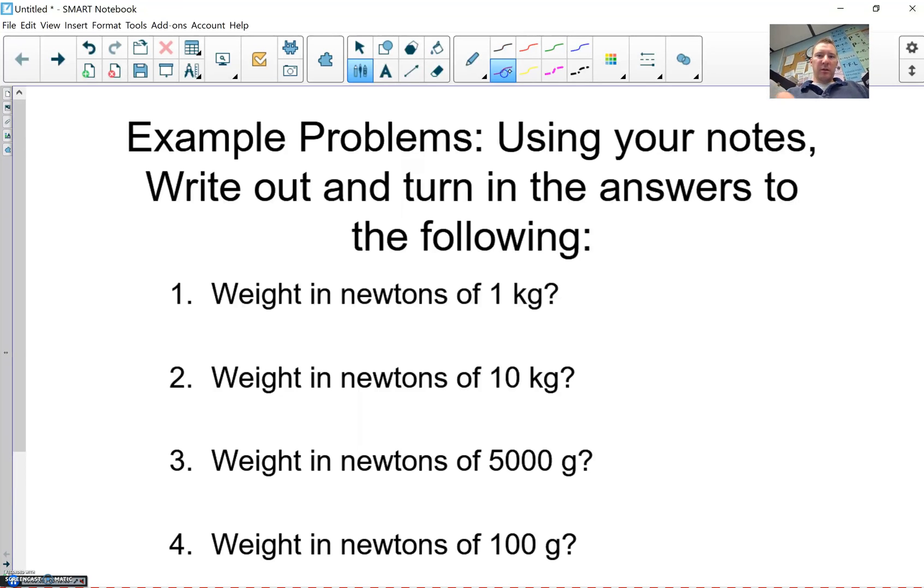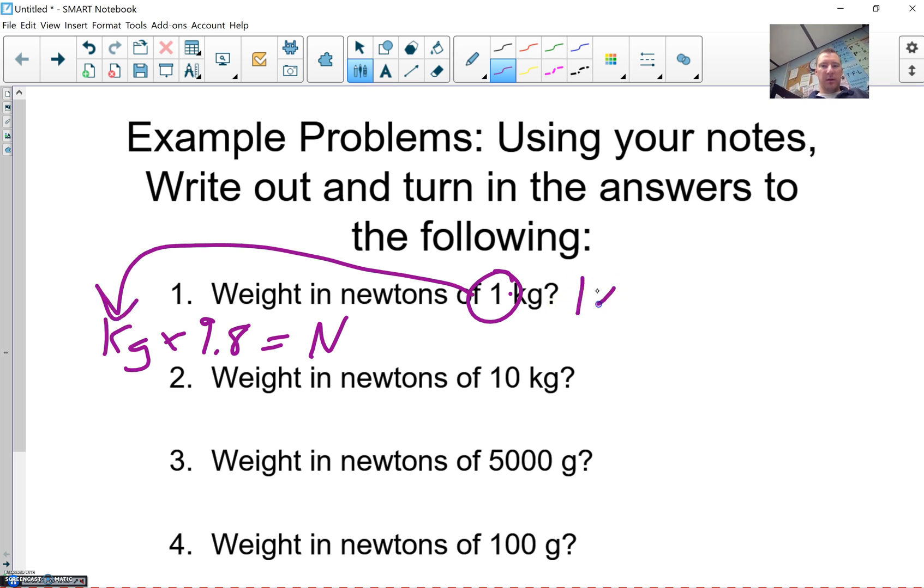So what we've got from the last lecture notes is we should know that it's kilograms times 9.8 will give you your answer in newtons. So the first one is pretty easy. We just plug the 1 into kilograms, and 1 times 9.8 does give you 9.8 newtons. So our first one, kilograms, 9.8 newtons, and sometimes we do use 10, but right now we're going for our exact numbers.